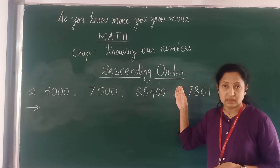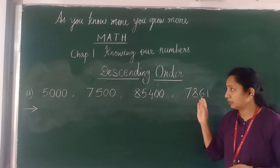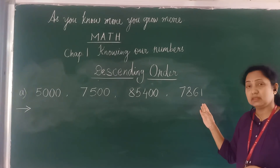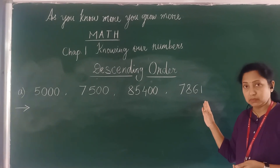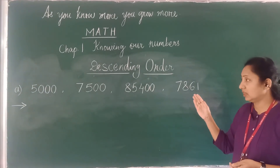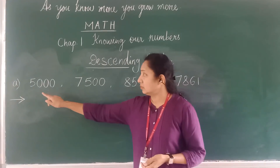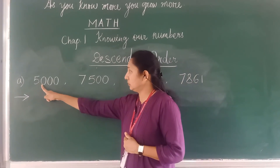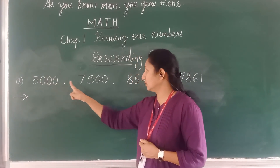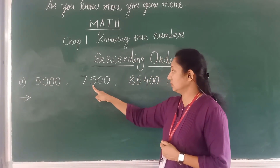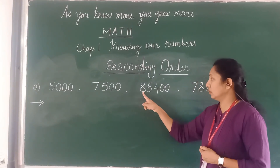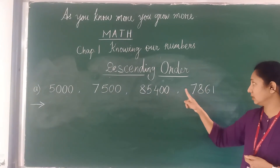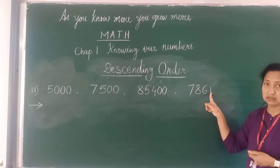Now we will see about descending order. Here are a few numbers I have written. Again, the first step is counting the digits. In the first number we have 4 digits, the second has 4 digits, the third has 5 digits, and the fourth has 4 digits.